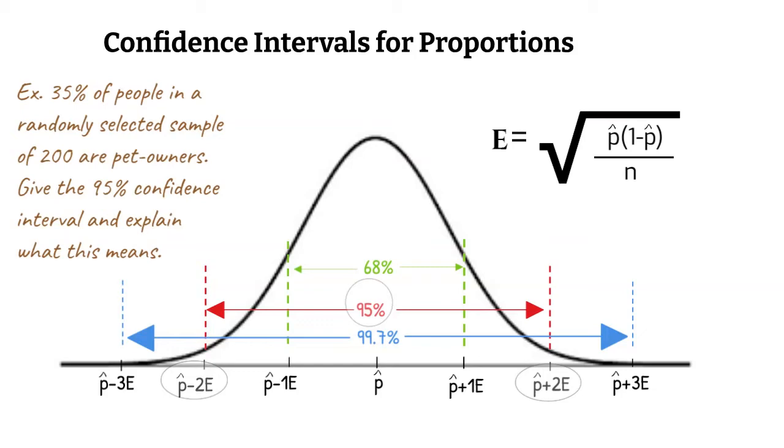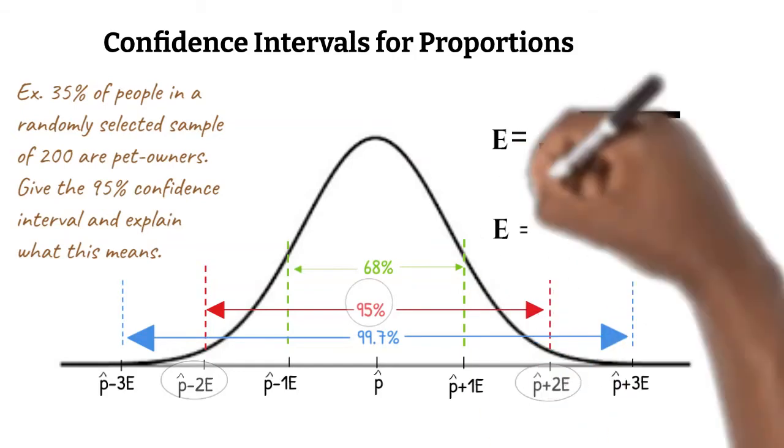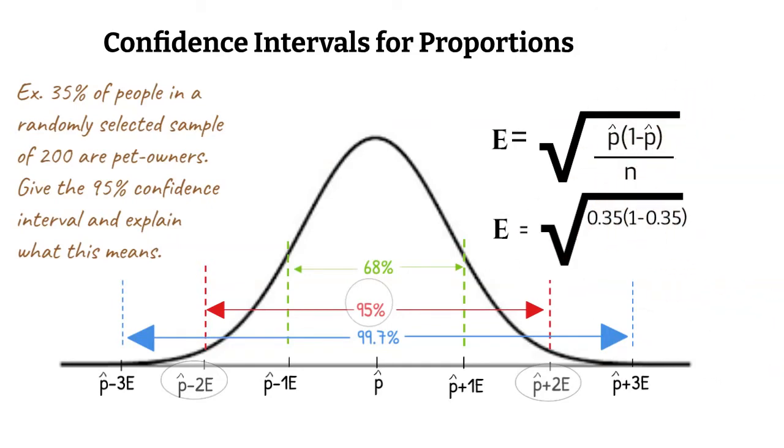To find the standard error, we use the formula E is equal to the square root of 0.35 times 1 minus 0.35 over the sample size, 200. Our standard error is 0.0337. Multiply this value by 2 to get 2 standard errors. We get 0.0674.